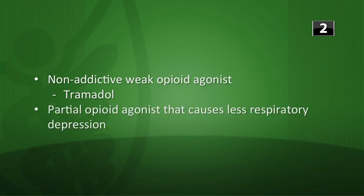Non-addictive weak opioid agonist — that's tramadol. Partial opioid agonist that causes a lot less respiratory depression — that's butorphanol. Next question: your patient has facial angiofibromas, ash-leaf spots of skin depigmentation, a history of seizures and mental retardation. What condition does this patient have and what neoplasms is this patient at risk of developing?